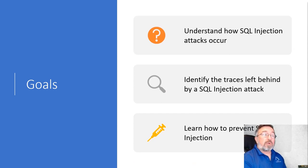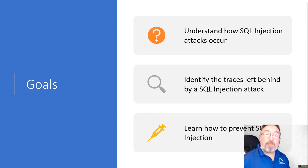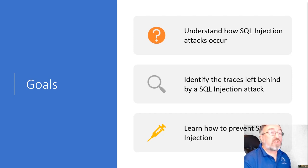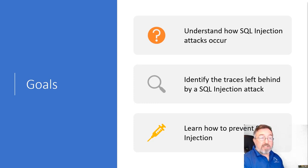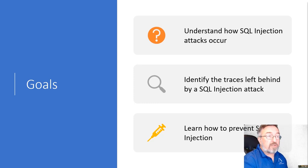The goals today are simple. We want to talk about what SQL Injection is, how it works, and then ways to stop it — because SQL Injection is a major problem. It is not a small problem; it is a huge problem. And the biggest thing about it is, it makes me angry because SQL Injection is solvable. We know exactly what to do to prevent it, and it's crazy that we're still dealing with it in 2020. But we are, and we need to talk about it.